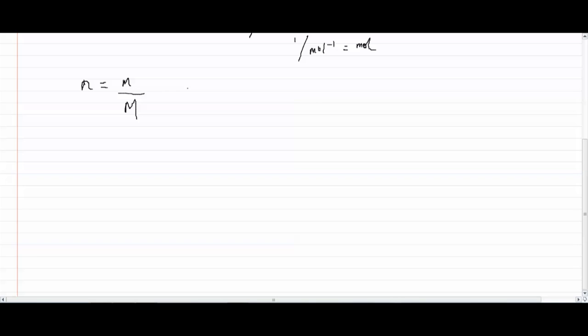So we can say that the number of moles times the molar mass is equal to the mass over the molar mass multiplied by molar mass. And those two cancel out to isolate the mass by itself. So we can say that the mass is equal to the amount in moles multiplied by the molar mass.